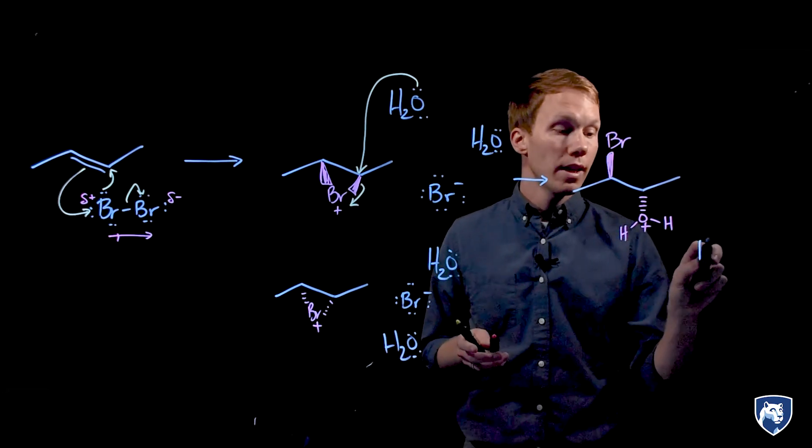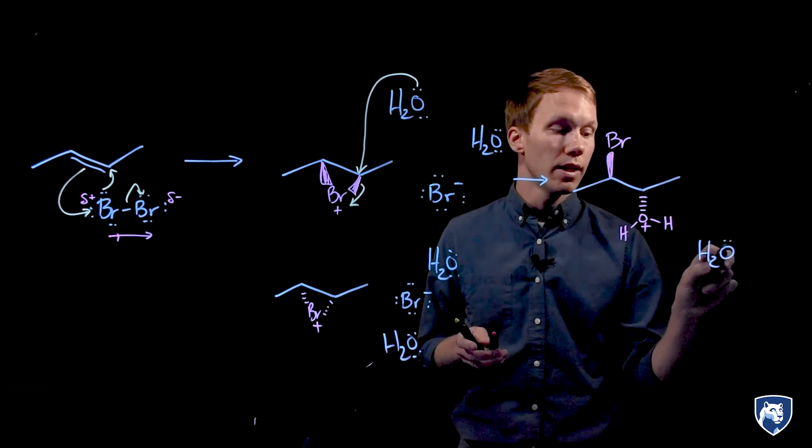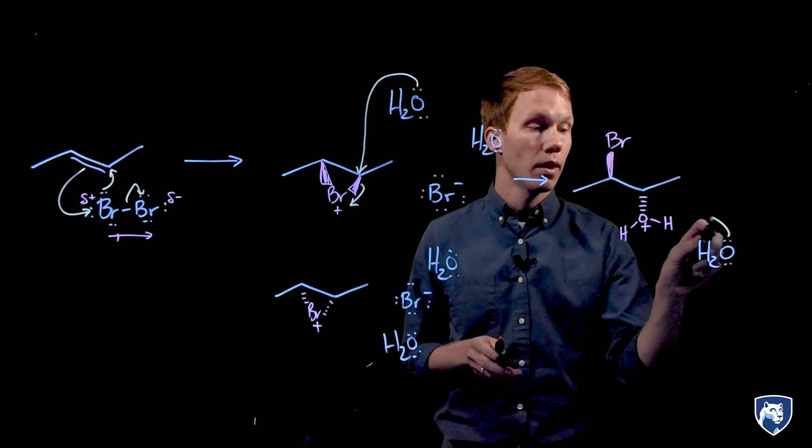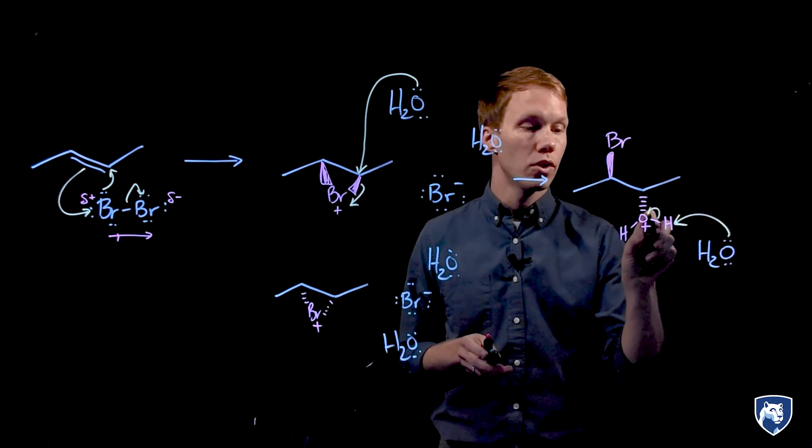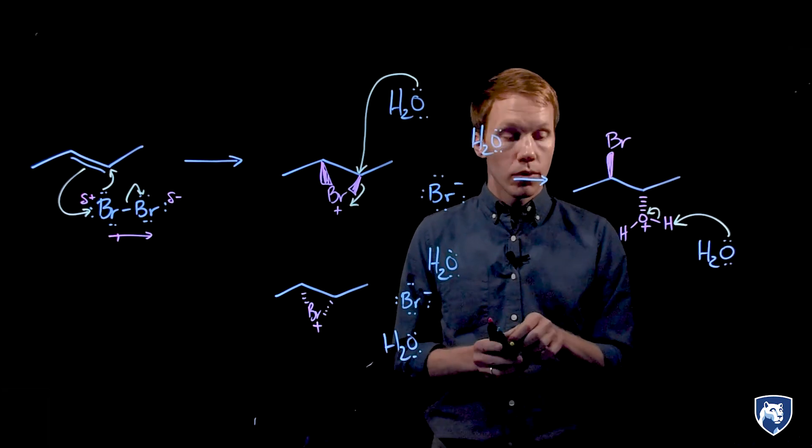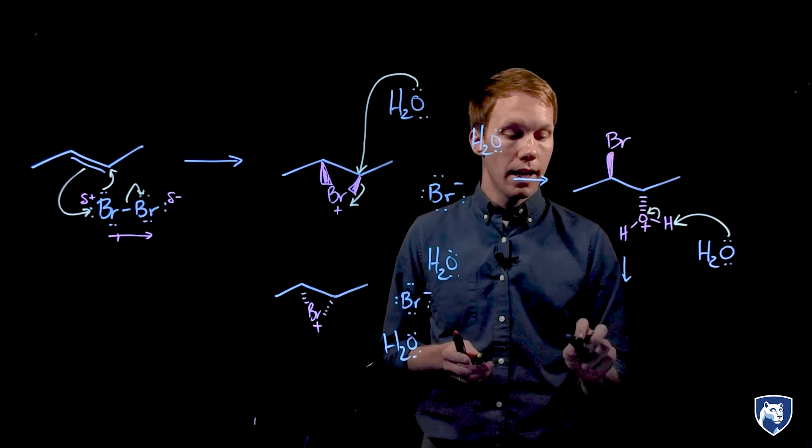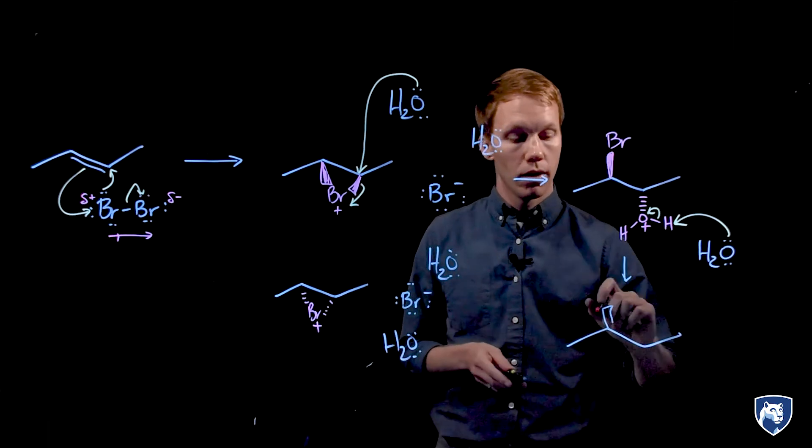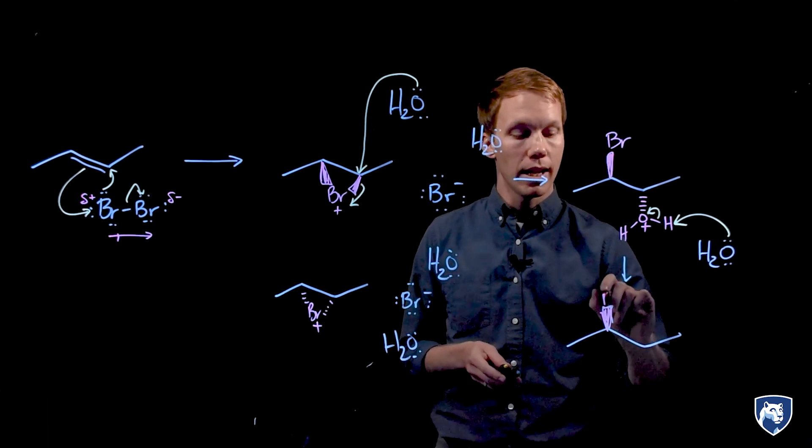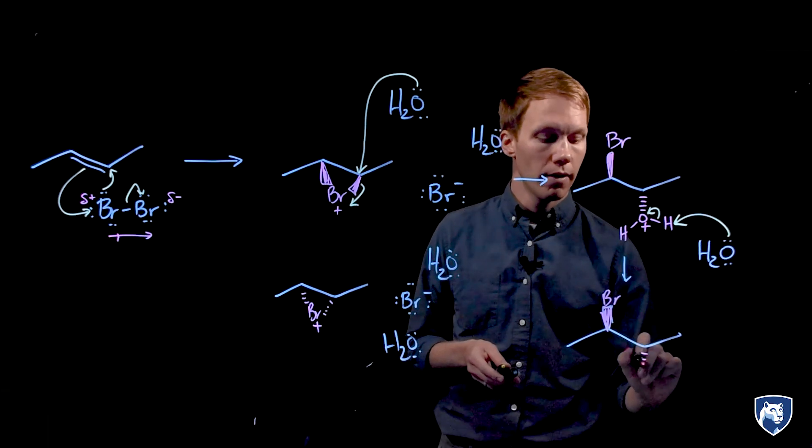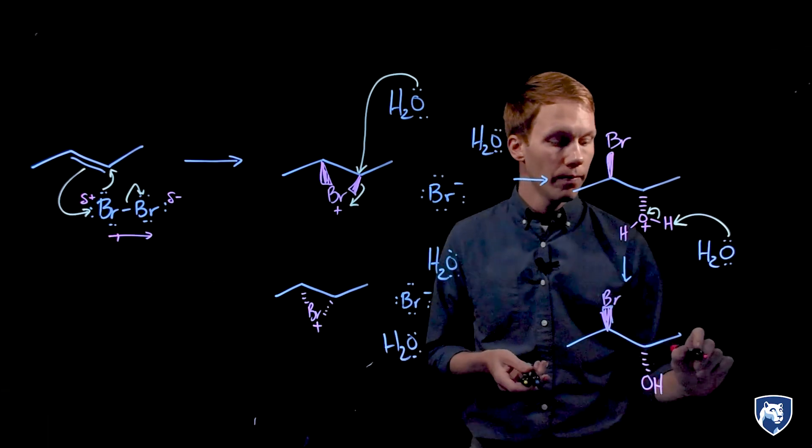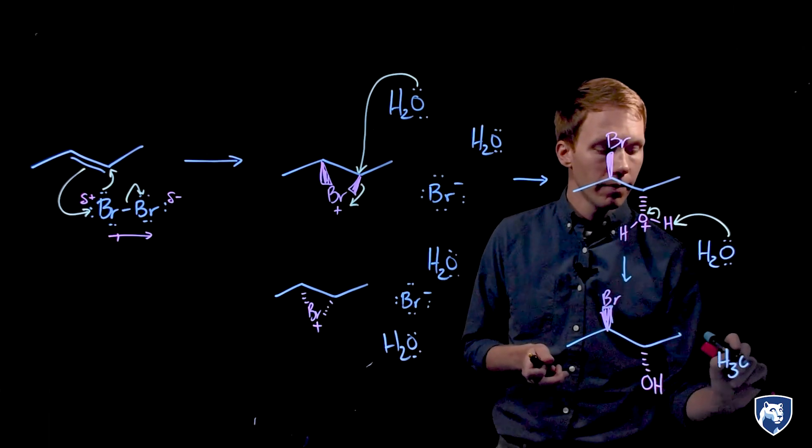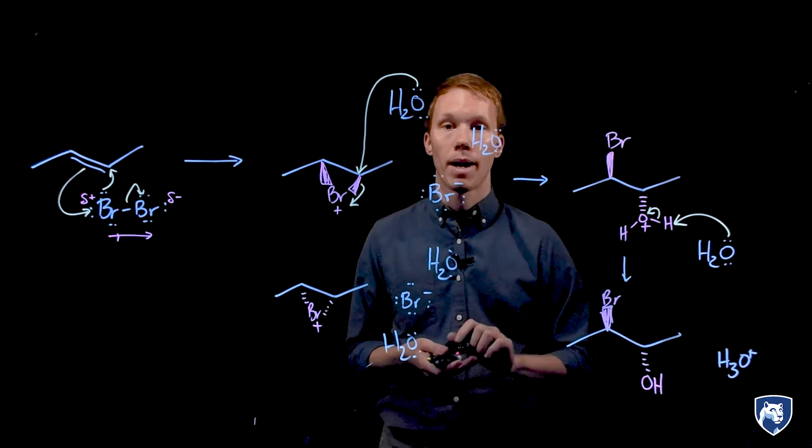Solvent is present in a huge excess relative to all these intermediates, so there's more water around. Water can remove this proton. Bromide ion could also do the job here as well. So what we end up with is a neutral halohydrin where we have the anti-arrangement of the halogen and the alcohol and also produce a little bit of acid as a byproduct.